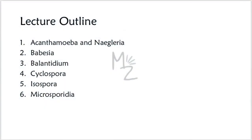First we'll talk about Acanthamoeba and Naegleria, then we'll move on to Babesia. The third one is Balantidium, the fourth one is Cyclospora, the fifth one is Isospora, and the sixth one is Microsporidia.